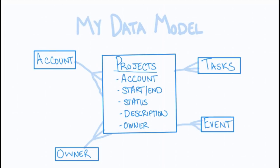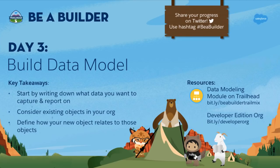With that we've drawn our data model and now we're ready to start building. Back to you Rebecca. That was awesome! Data models can be super complicated, but Leanne made it so easy to follow. To summarize: we should start by writing down what data we want to capture and report on, then consider all the existing objects in our org, and lastly define how our new object relates to those existing objects.